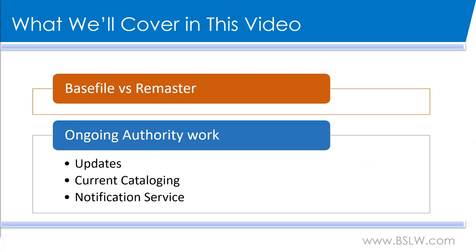Maybe your catalog has had years of authority neglect, or maybe you're wanting to make some changes to your bibliographic records, or maybe you'd like to start incorporating other controlled vocabularies. With any of these scenarios, you are probably considering a one-time retrospective service prior to maintaining your files on an ongoing basis. Today I would like to talk to you about your options. We'll first talk about our two retrospective services — our base file and our remaster — and how they are different. Then I will talk about our ongoing services, which include updates, current cataloging, and notifications.